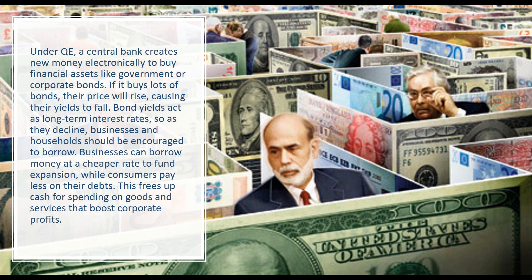Bond yields act as long-term interest rates. As they decline, businesses and households should be encouraged to borrow. Businesses can borrow money at a cheaper rate to fund expansion, while consumers pay less for their debt. This frees up cash for spending on goods and services that boost corporate profits. But this is where the fallacy came in — because when you have massive unemployment, people stop spending because they're scared, even if interest rates are very low.